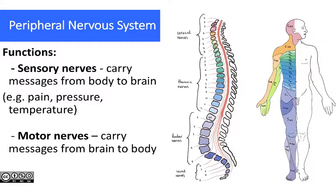The motor nerves carry information from the central nervous system out to the skeletal muscles. One interesting thing about the dermatomal map is that if somebody has areas of weakness or numbness, the physician or neurologist examining them will look at that pattern as a way to assess where the problem is in the nervous system.